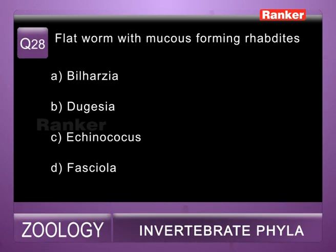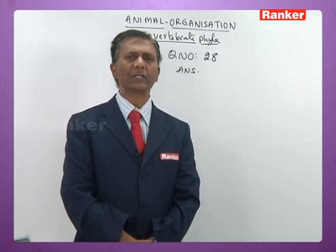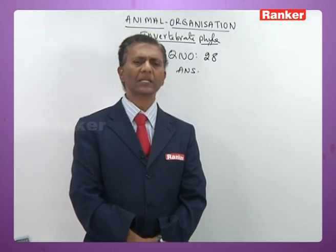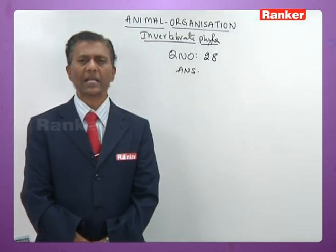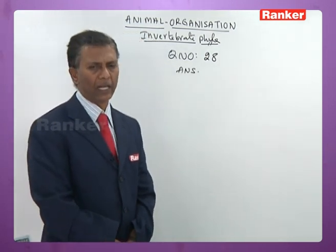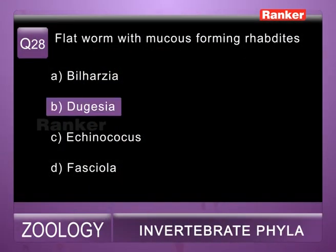Twenty-eighth question: flatworms with mucus-forming rhabdites — a) Bilharzia, b) Dugesia, c) Echinococcus, d) Fasciola. Rhabdites that secrete mucus are present in all Turbellaria. Among these, Dugesia or planaria belongs to Turbellaria. So twenty-eighth question correct answer is b.